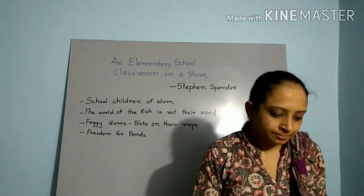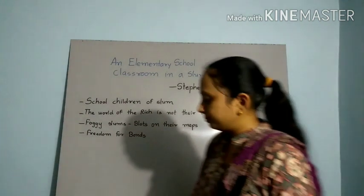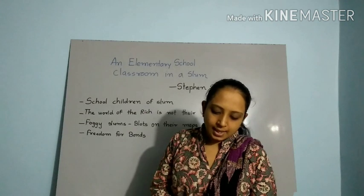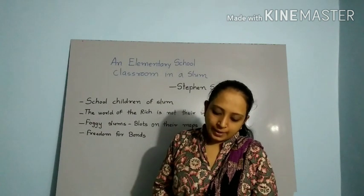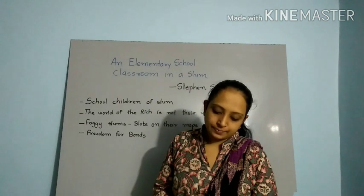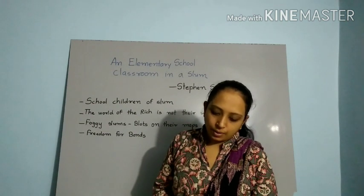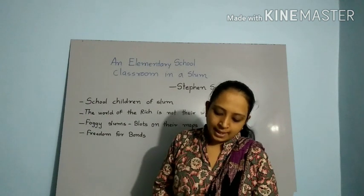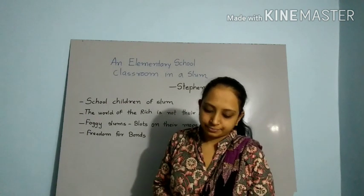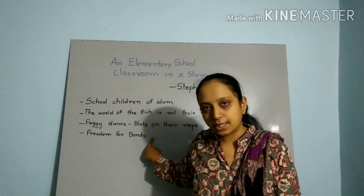Now the fourth and last stanza: 'Unless governor, inspector, visitors — this map becomes their window. And this window, shut open on their lives like catacombs, break open till they break the town and show the children green fields. Make their world run azure on gold sands, make it into books — the white and green leaves open history. Their language is the sun.' One-line description: freedom — that they also need to be independent.